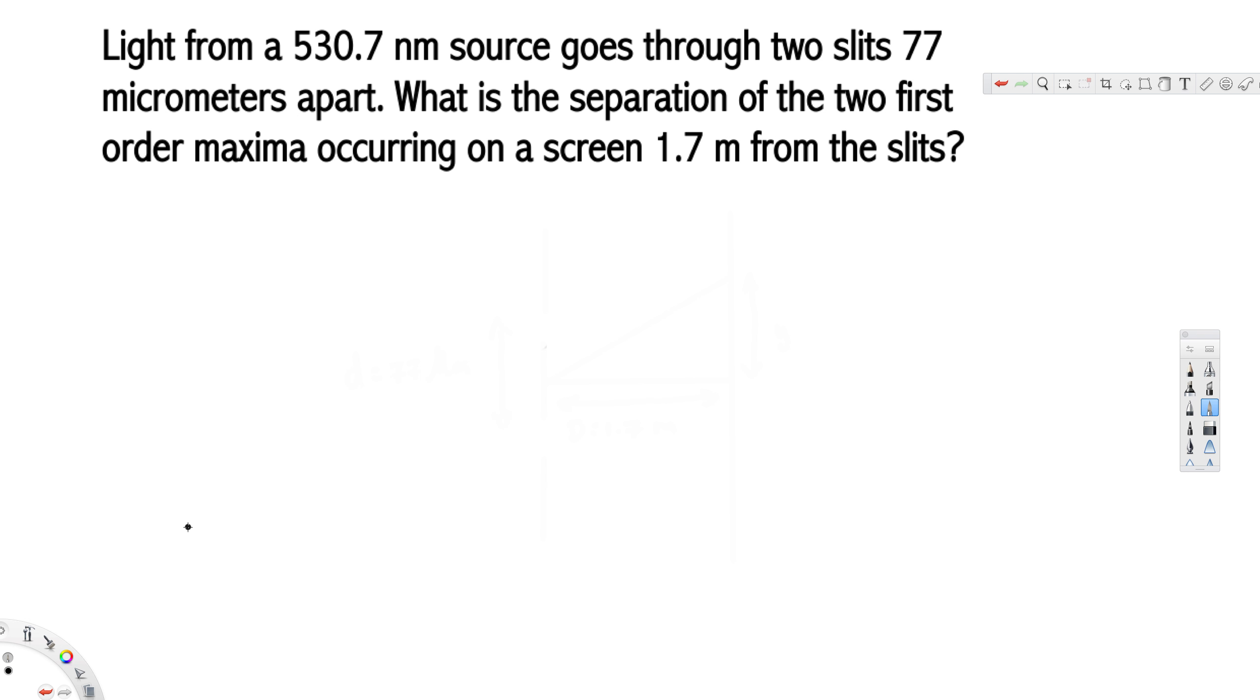Okay guys, let's look at this problem right here. This question is asking: light from a 530.7 nanometer source goes through two slits 77 micrometers apart. What is the separation of the two first order maxima occurring on a screen 1.7 meters from the slits? So here the question is asking for the separation of the two first order maxima.